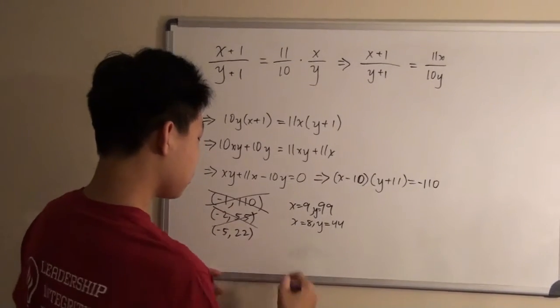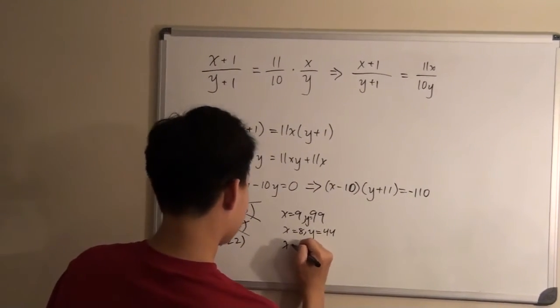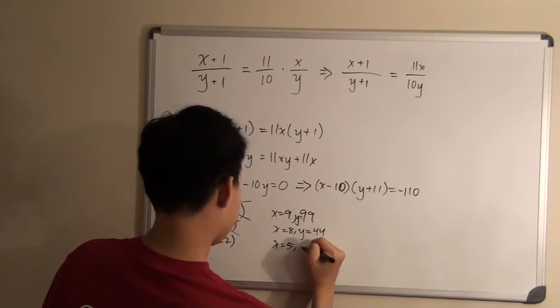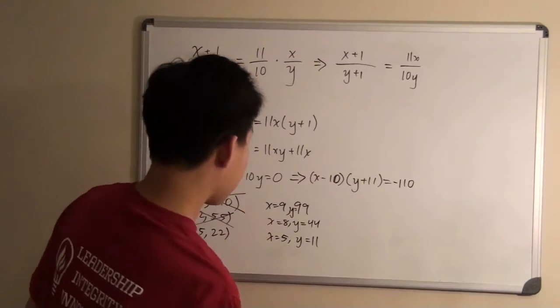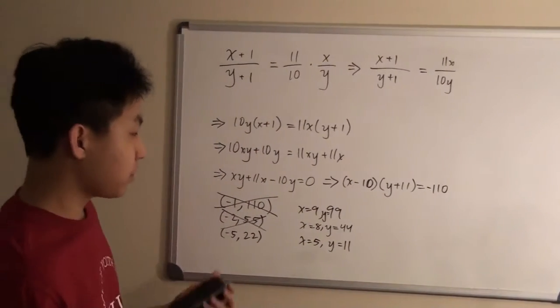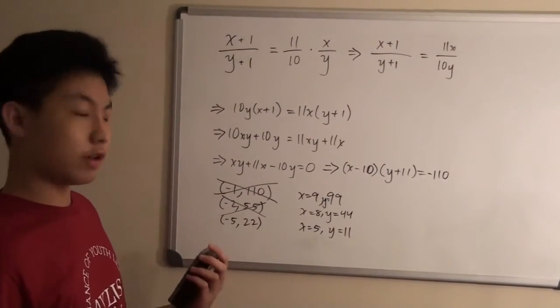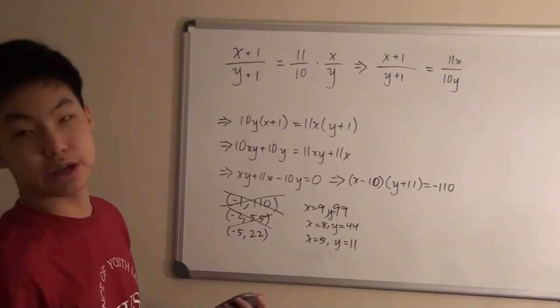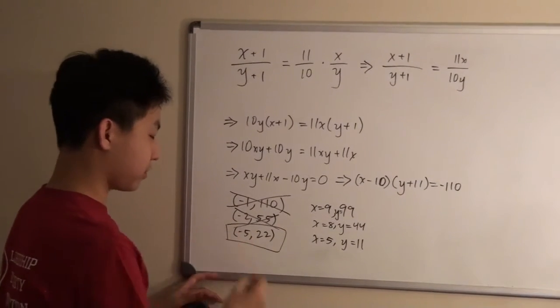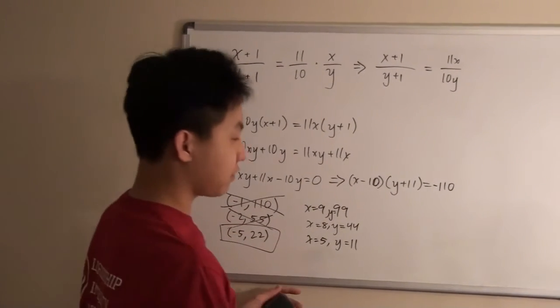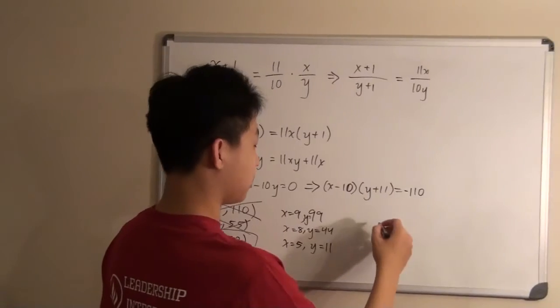And for the last one, x would equal 5, and y would equal 11. So from this, 5 and 11 are both prime numbers, which means that they would both have to be relatively prime, which means that this is the only solution that would work for us. So this would give us the final answer of 1.